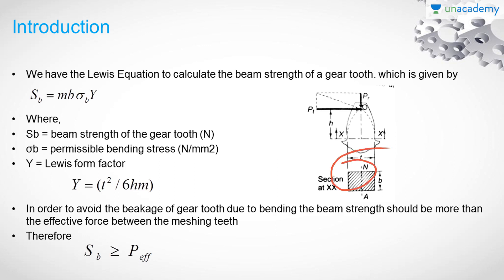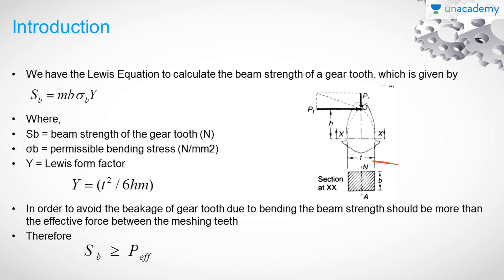As you can see in this figure, T is the thickness of the gear tooth at the base and H is the perpendicular distance from the base to the tangential force Pt. And B is the length of the gear tooth along the line which is parallel to the axis of the gear.